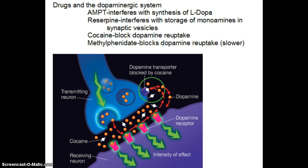Cocaine actually blocks dopamine reuptake, so the dopamine can't be recycled, stays out in the cleft longer, and has more opportunities to activate the receiving neuron. The same mechanism of action occurs with methylphenidate — the name of Ritalin — which is used to treat ADD and ADHD. It also blocks the reuptake of dopamine, allowing dopamine to stay in the cleft longer and activate neurons. However, methylphenidate is a much slower acting and much longer lasting drug than cocaine, so while the mechanism is the same, the effects aren't identical.